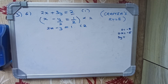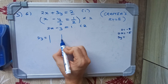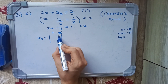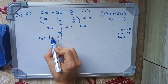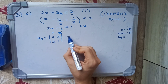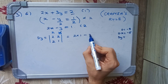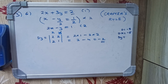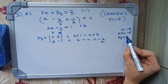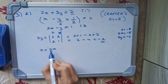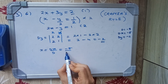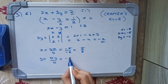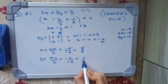For Dy, y cancels and we write constants 2 and 1, keeping x-coefficients 2 and 2. Cross multiplying: 2 × 1 minus 2 × 2 equals 2 minus 4 = -2. So Dy = -2. Therefore x = Dx/D = -5/-8 = 5/8, and y = Dy/D = -2/-8 = 1/4.